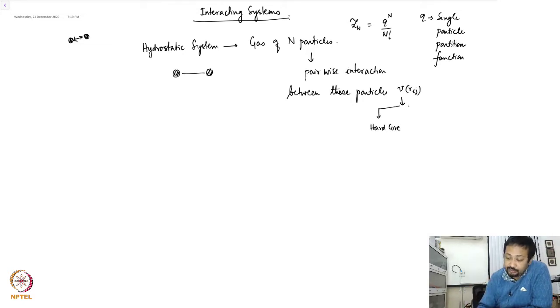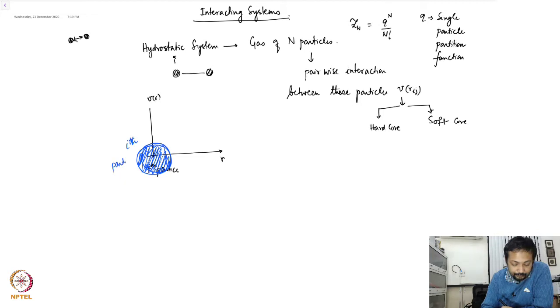Now usually this pairwise interaction is typically either taken as a hard core, which again gives you certain advantages, or is a soft core. A hardcore potential is if you plot the potential as a function, so let's say you place this particle ith particle and this is the distance from the center of the ith particle, and you are plotting V of r. You say that there is a certain size of this particle.